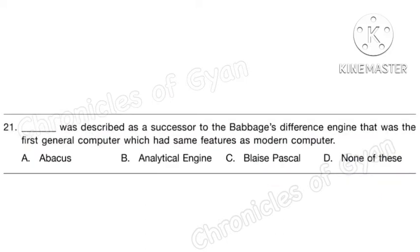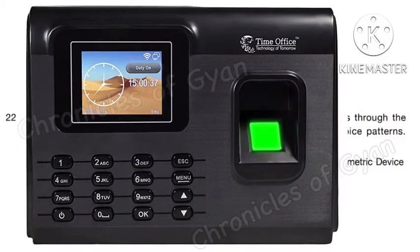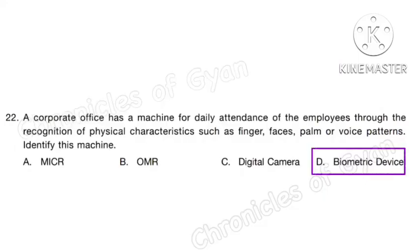Question 21. The blank was described as a successor to the Babbage Difference Engine — the first general computer which had the same features as a modern computer. Correct answer is option B: Analytical Engine. Question 22. A corporate office has a machine for daily attendance of employees through recognition of physical characteristics such as finger, face, palm, or voice patterns. Identify this machine. Correct answer is option D: biometric device.